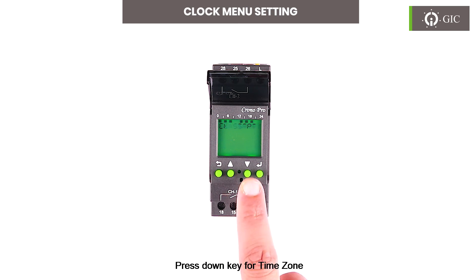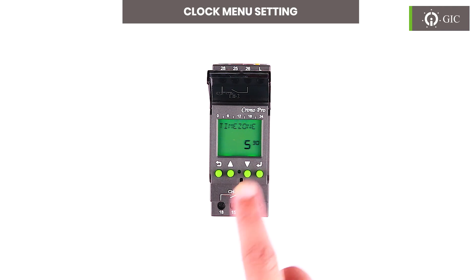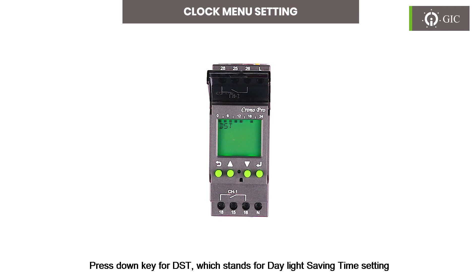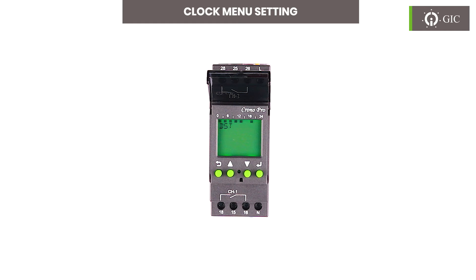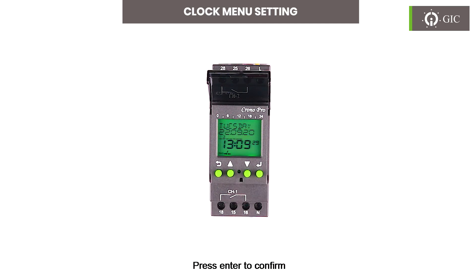Press the down key for 'Time Zone.' The user can select the required time zone as per region and press enter to confirm. Press the down key for 'DST,' which stands for daylight saving time setting. The user can select the required time setting using this menu — refer to the manual for a detailed explanation. Press the down key for 'End' to go directly to the main screen. Press enter to confirm.